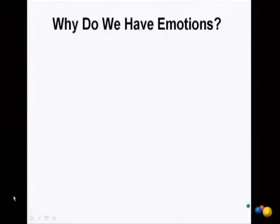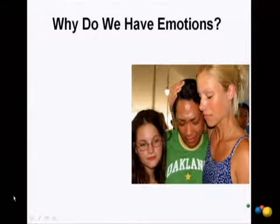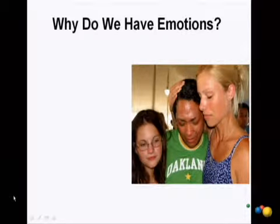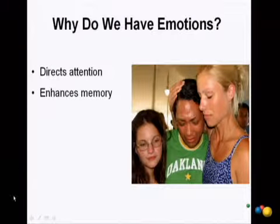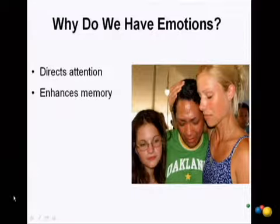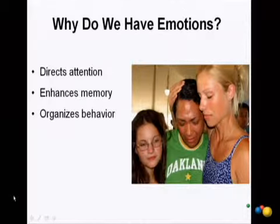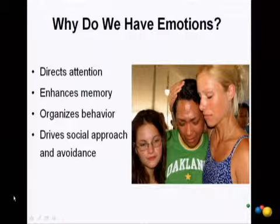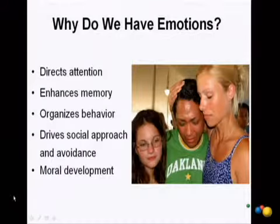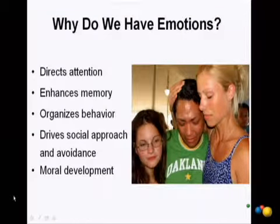So why do we have emotions? Just looking at this photograph, notice where your attention goes. From multiple decades of research on emotions, we know that there are several functions. Emotions help to direct our attention. They help enhance our memory and how we encode and consolidate different pieces of information, especially information that's personally salient. Emotions also help us to organize our behavior and our orientation towards other people — specifically, they help drive and direct social approach or even social avoidance. And probably most importantly for the Search Inside Yourself course, different emotions and our learning history with emotions really helps to develop moral and ethical behavior.